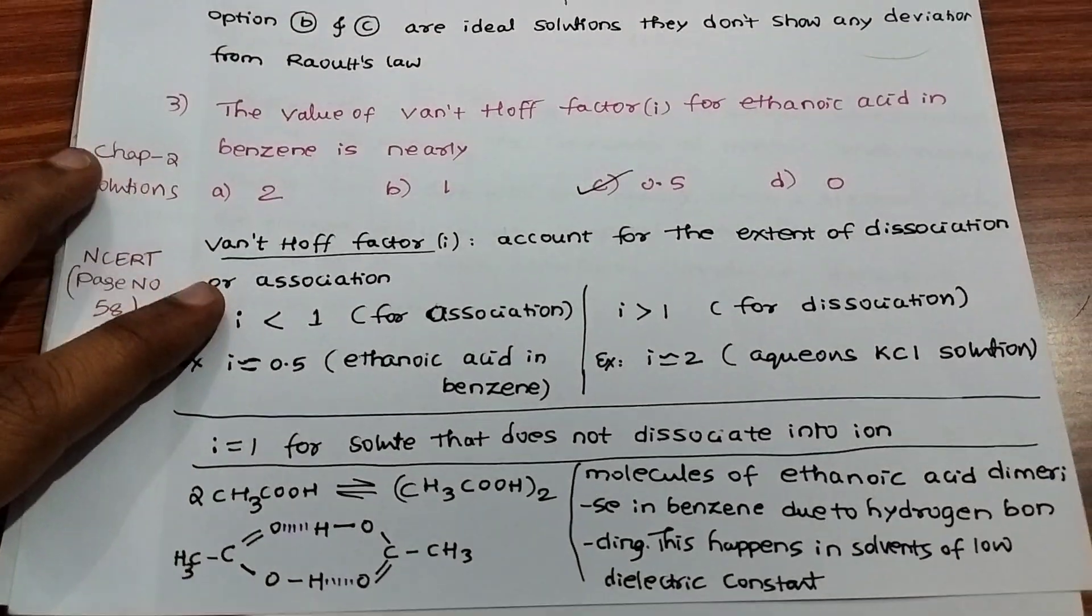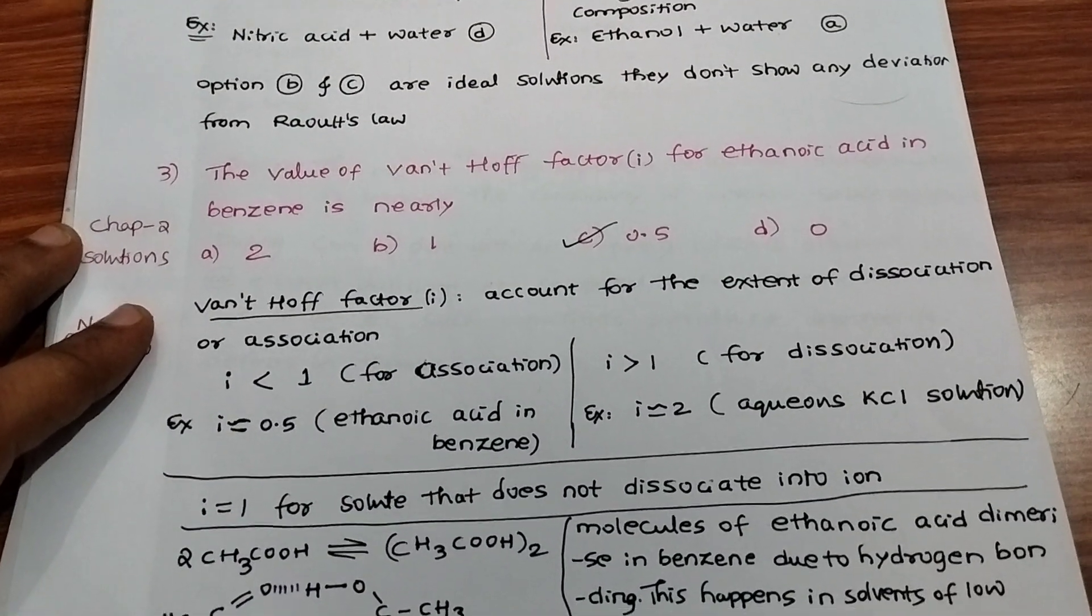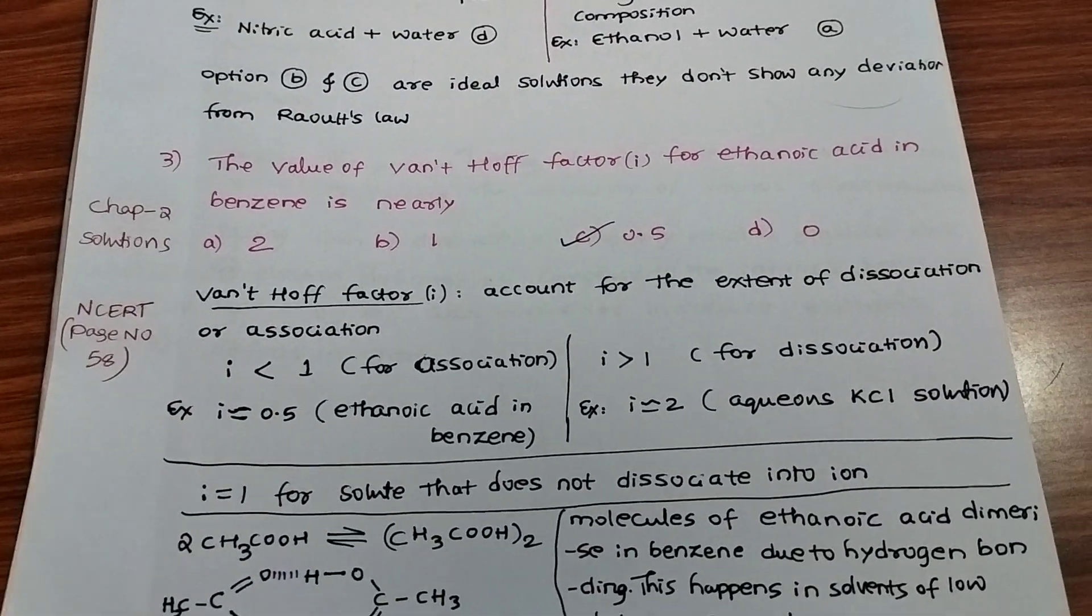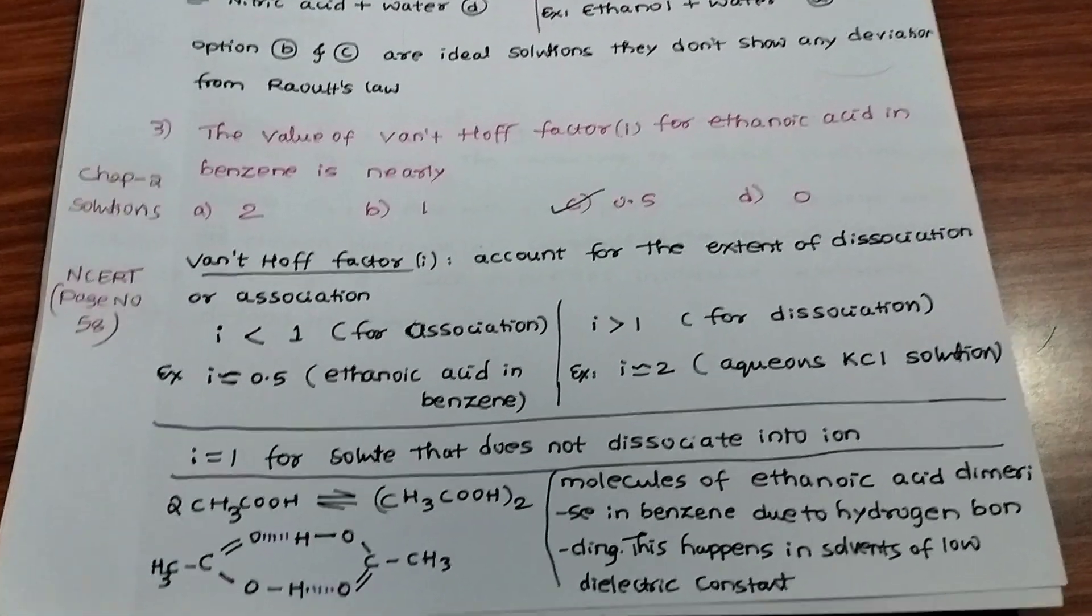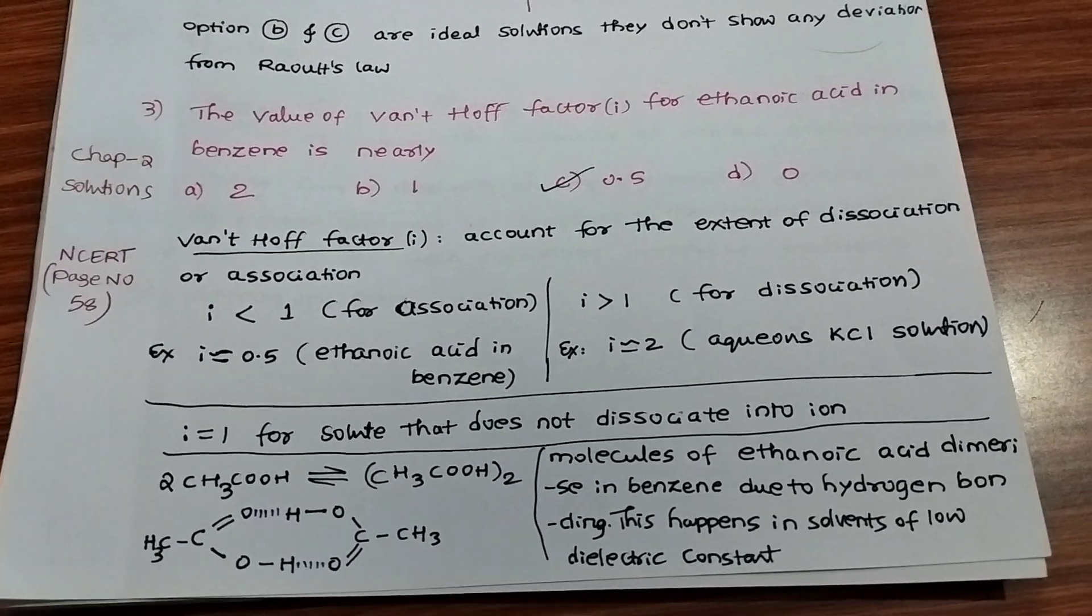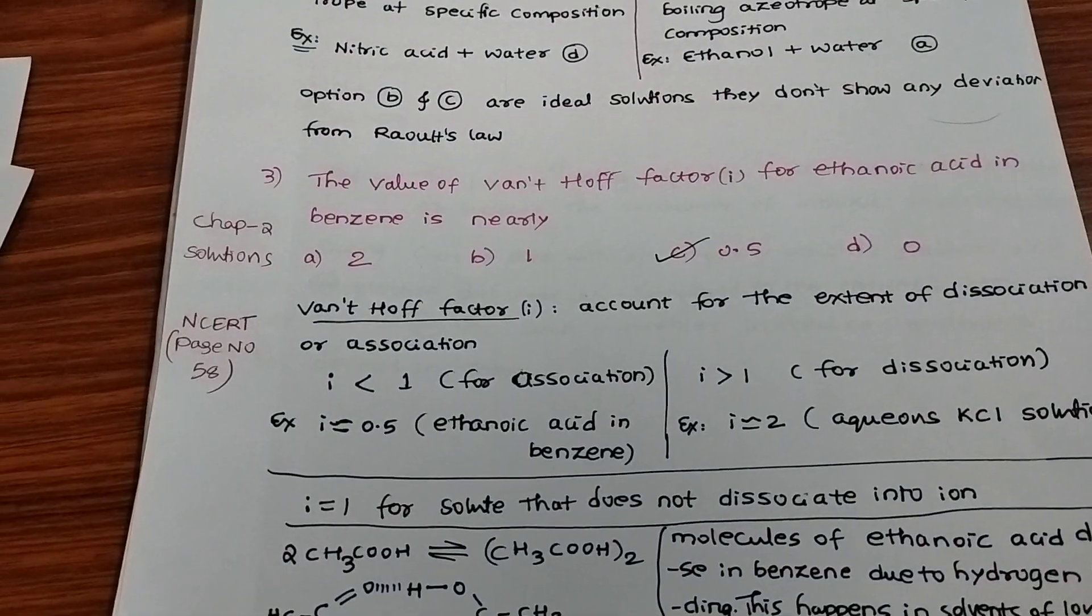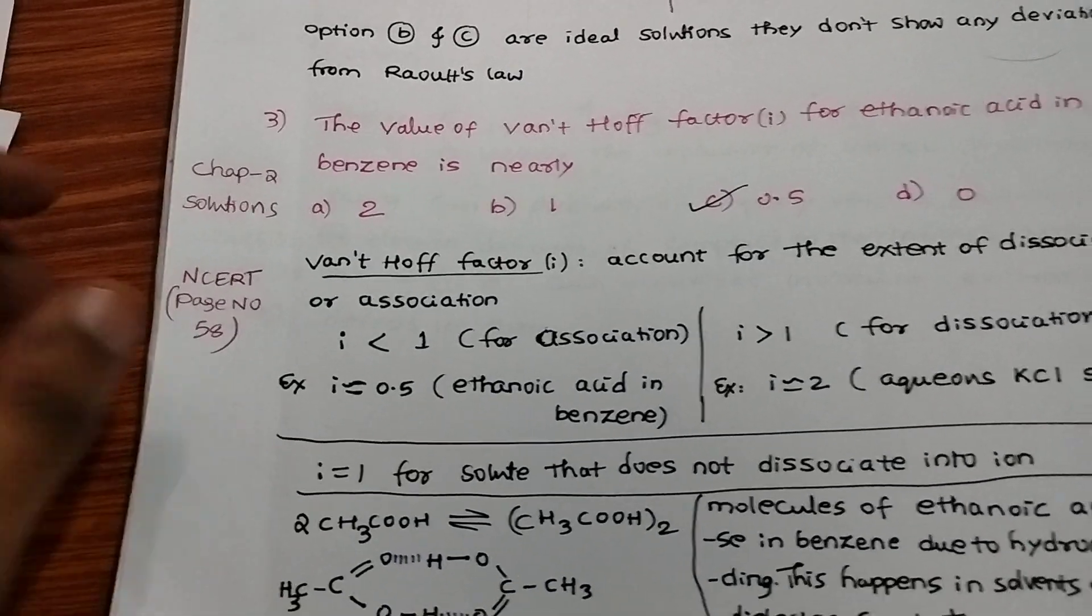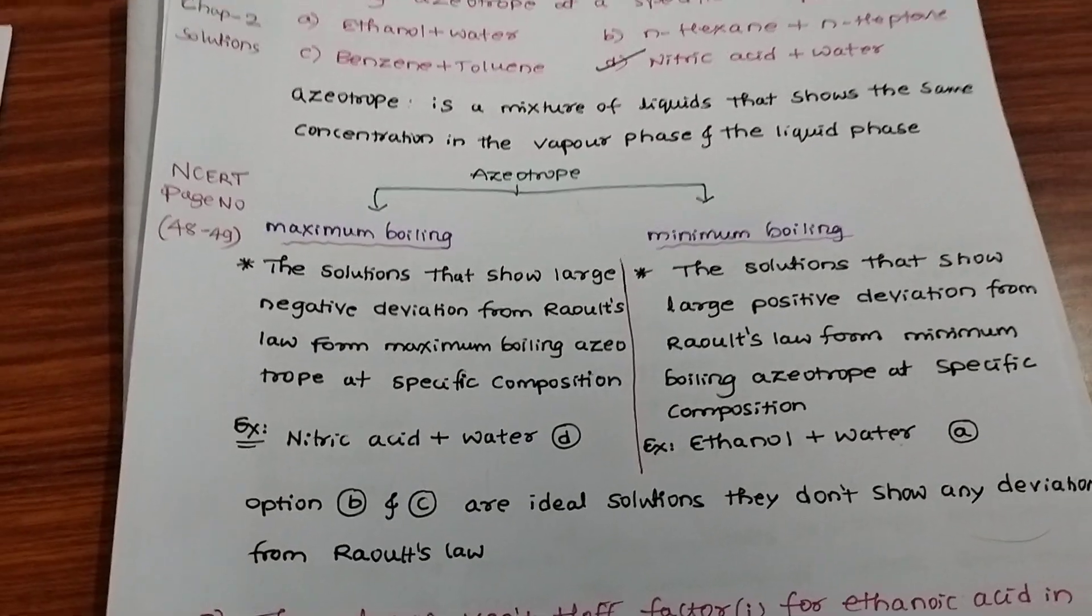If i is less than 1, it's for association. Greater than 1 is for dissociation. It is nearly equal to 2 for aqueous CaCl solution, and i equals 1 for solute that does not dissociate into ions. In acetic acid, we form a dimer with benzene because of hydrogen bonding.